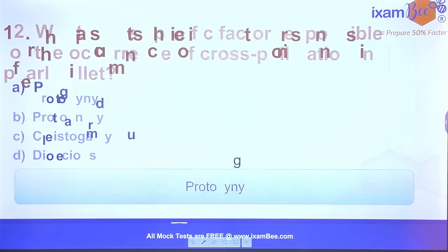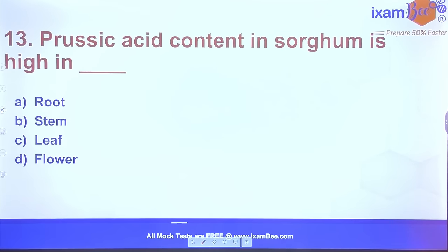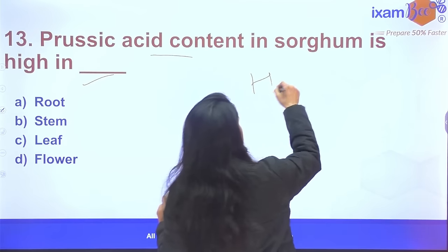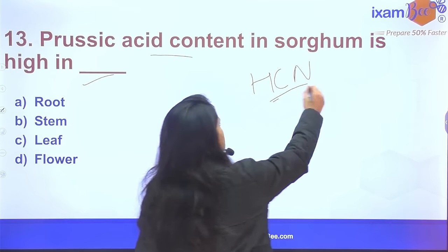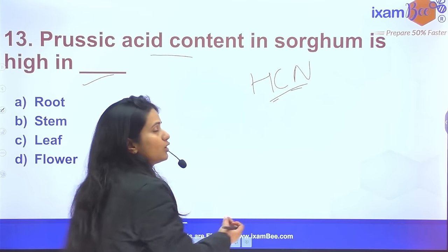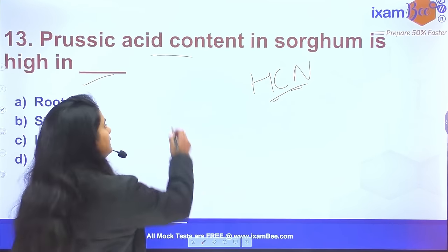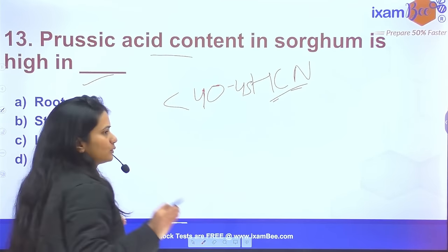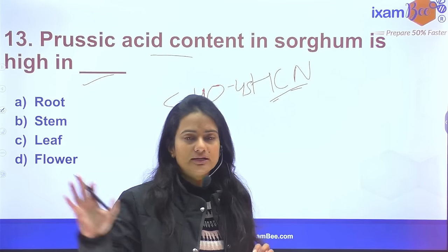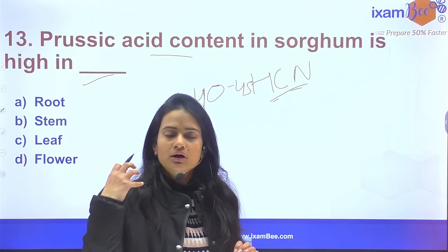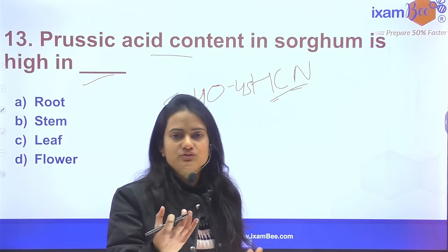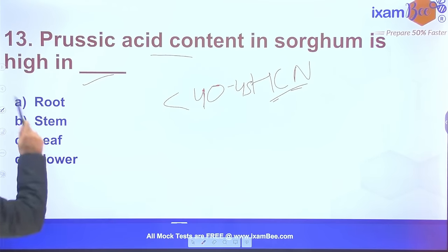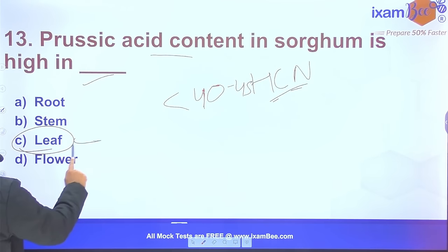Question 13: Prussic acid content in sorghum — we know that HCN content or prussic acid content is very high in sorghum, which causes sorghum poisoning. If the crop is less than 40–45 days old, we don't take a cutting and don't feed it to livestock because HCN poisoning can occur. Prussic acid is generally present in highest amounts in the leaves.